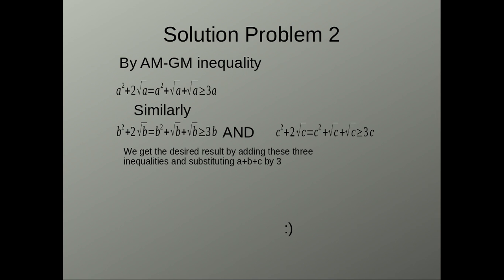Similarly, B square plus 2 root B is greater than or equal to 3B and C square plus 2 root C is greater than or equal to 3C. Now, add these three inequalities and replace A plus B plus C by 3 to get the desired inequality.